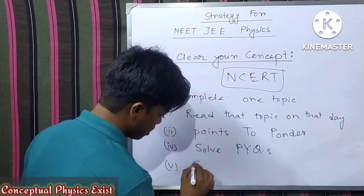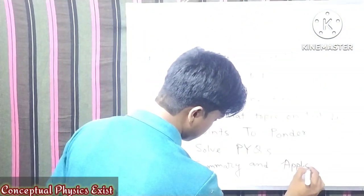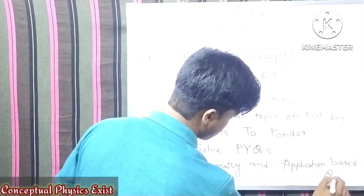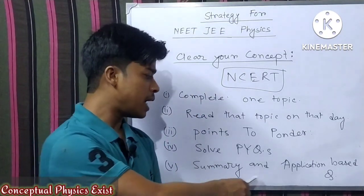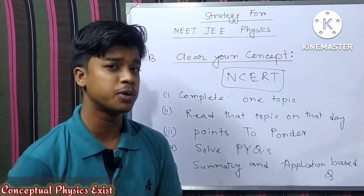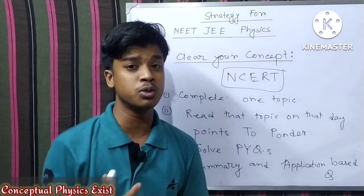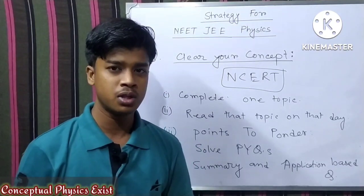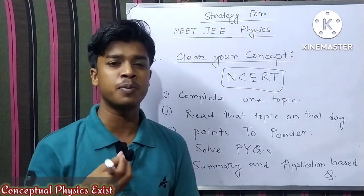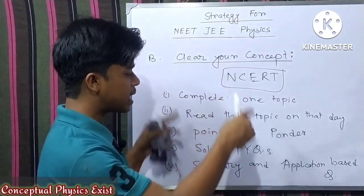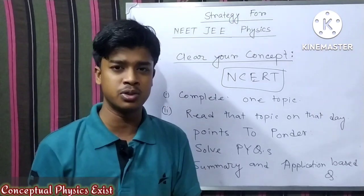Fifth point: summary and application-based questions. The NCERT book has a summary section at the end of each chapter. After reading the summary, you need to attend application-based questions. If you go to previous year questions, you also need to handle application-based questions. If you don't complete these steps, you don't complete the NCERT properly, and you don't complete the physics. This is the NCERT book approach — and this is called the first one-page note-taking method.